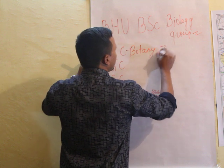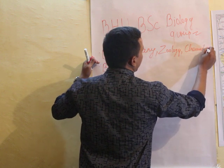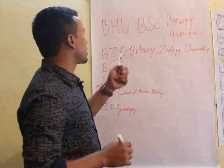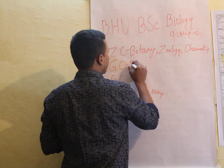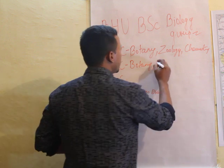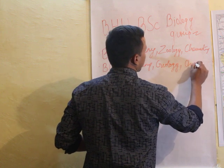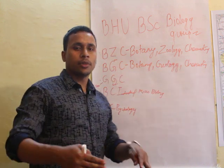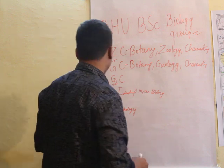So the first group is BZC — Botany, Zoology, Chemistry. The second group is BZGC — Botany, Zoology, Chemistry, and Geology. Geology, also known as Bhugyan, is the subject in which we study about the interior parts of the Earth.